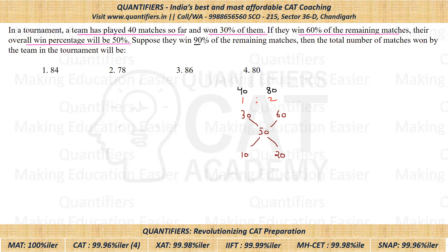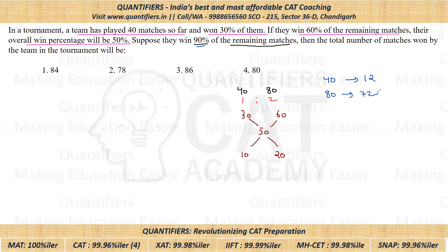Now the question is: if they win 90% of the remaining matches, what is the total number of matches won by the team? Till now they have played 40 matches, out of which they have won 30%, which is equal to 12. The remaining matches are 80, and out of 80 matches, if they are winning 90%, that means they are winning 72 matches. So the overall matches won will be equal to 12 plus 72, that is 84. So 84 — option one — is the correct answer.